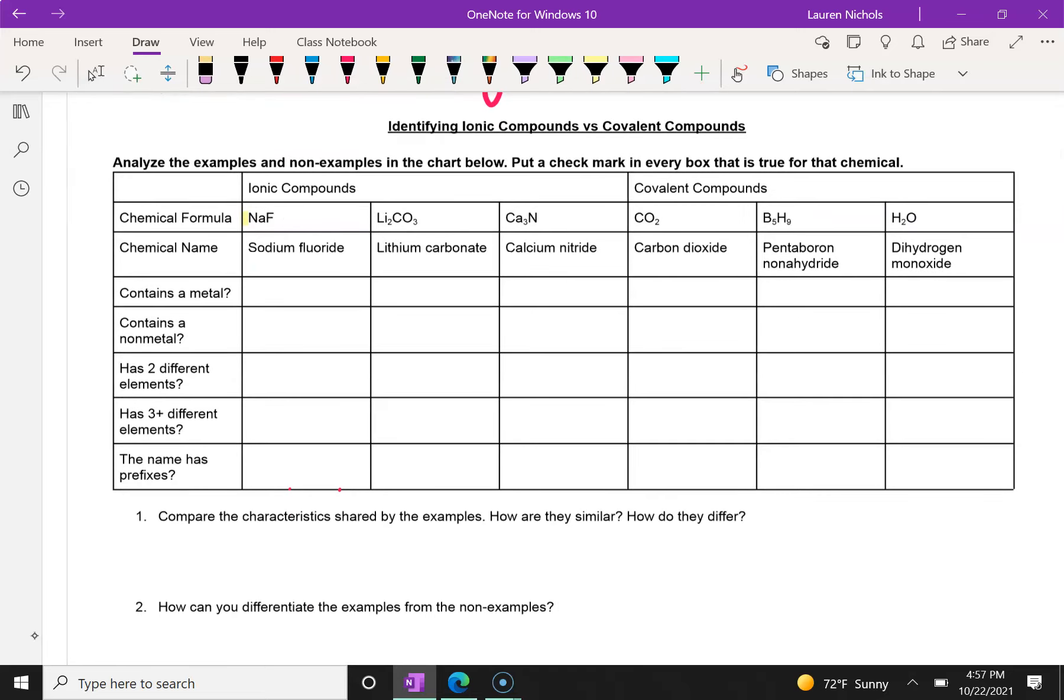So first, we're going to do a little activity. You should have this page in front of you. What I want you to do is look at the examples of ionic compounds, which are highlighted in yellow, and the examples of covalent compounds, which are highlighted in blue. You'll then go through and answer the questions that are in this part here that I just highlighted in green about that column.